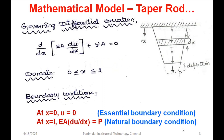In part two, we discussed how to convert an engineering problem. We considered a taper rod problem and converted it into a mathematical model. A mathematical model should consist of three things: the governing differential equation, the domain of the field problem, and the boundary conditions. For the taper rod, we derived a second-order differential equation, and the domain is the length of the rod from 0 to L.